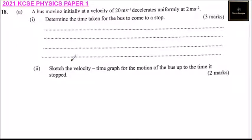Question number 18, part A. A bus moving initially at a velocity of 20 meters per second decelerates uniformly at 2 meters per second squared, determining the time taken for the bus to come to a stop.